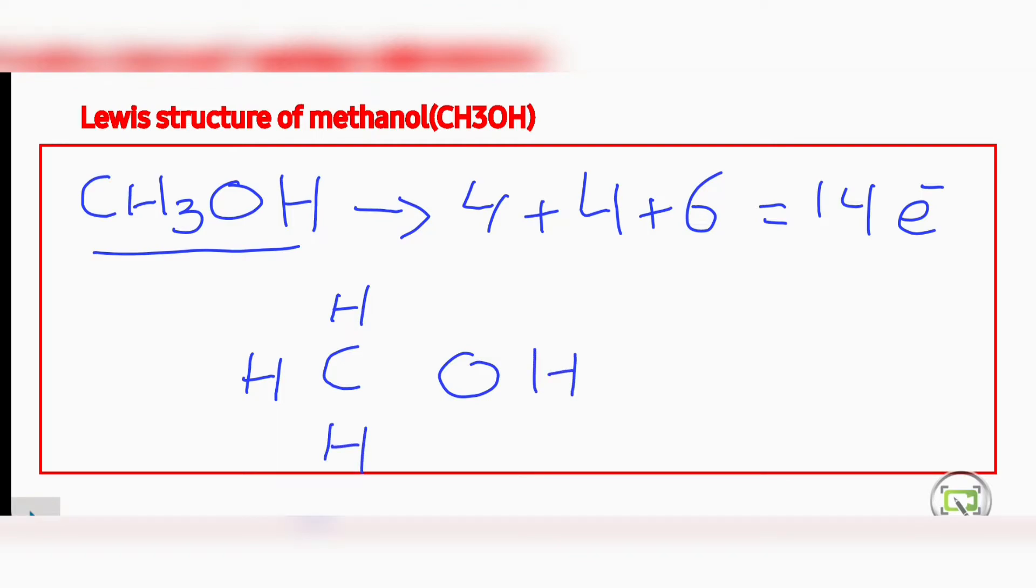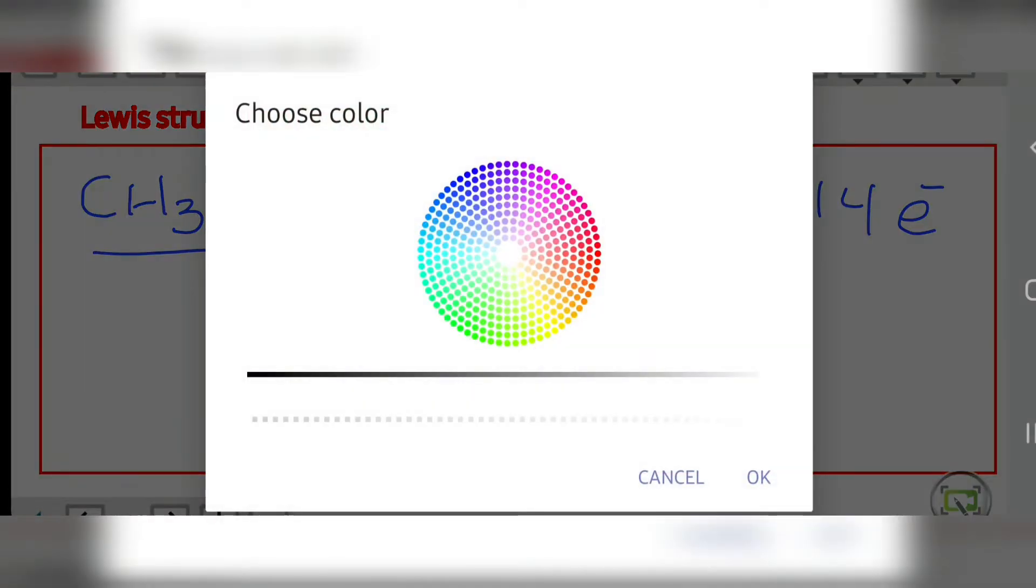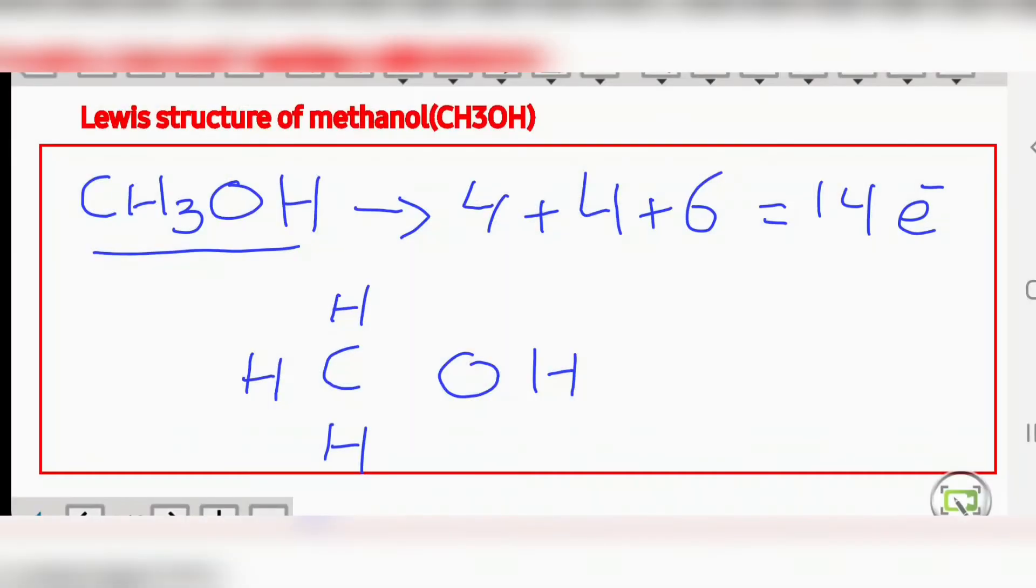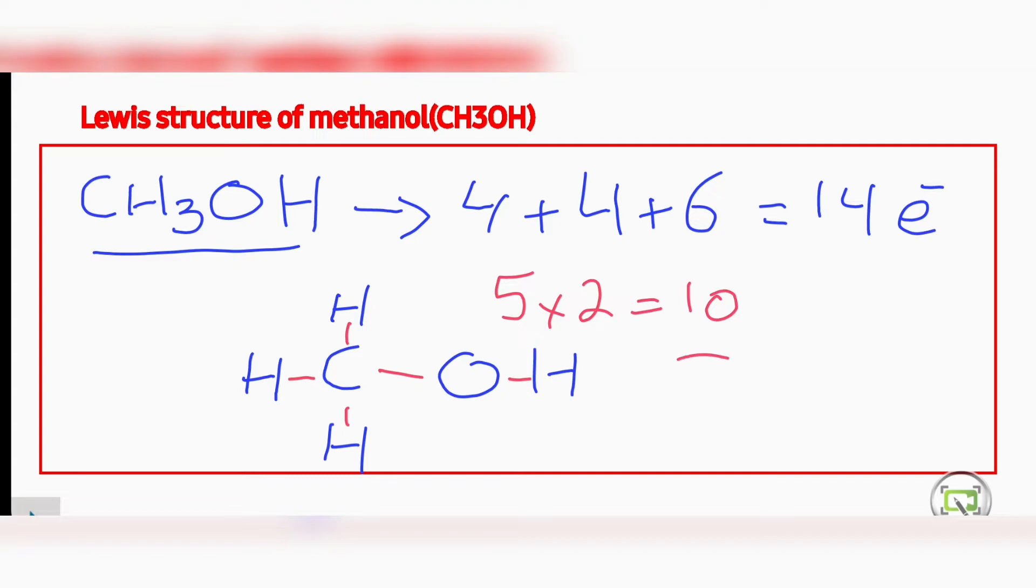Now first of all, you can draw one bond for each connection. We will see how much electrons can be accommodated. We have drawn five bonds, so five multiply by two equals ten electrons accommodated. Now you know that carbon has only four electrons in its valence, and hydrogen has only one, so we can put two lone pairs on oxygen. This is the structure.